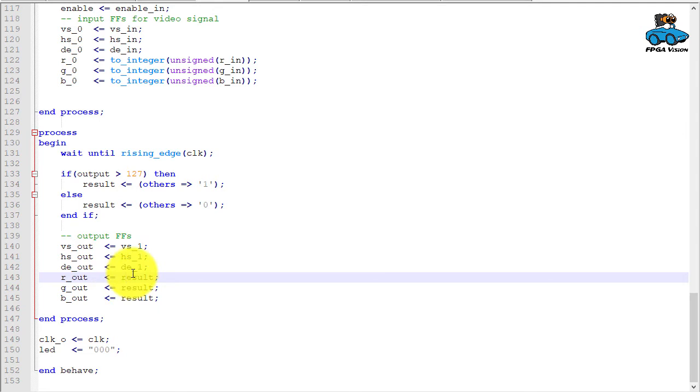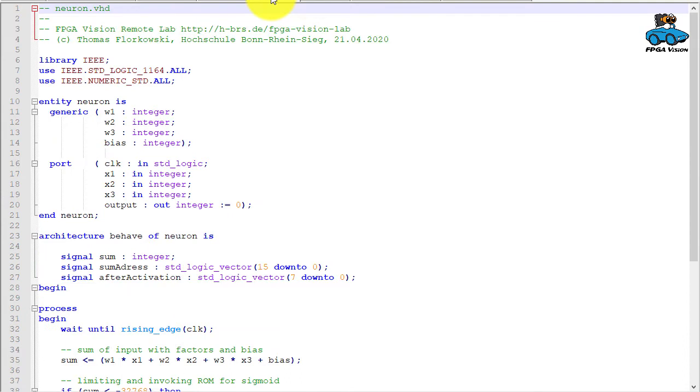We will get a more complex output processing in another video which will come later. But as a start, this is the output processing converting the result of the neural network into colors, so that we can see what the neural network does.